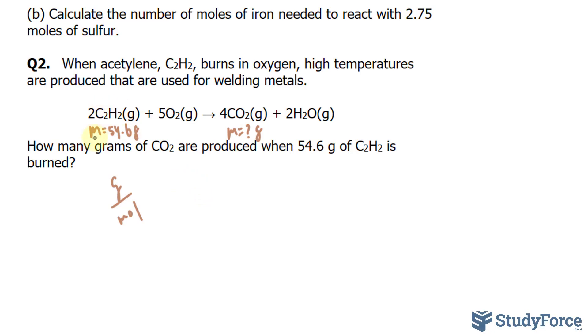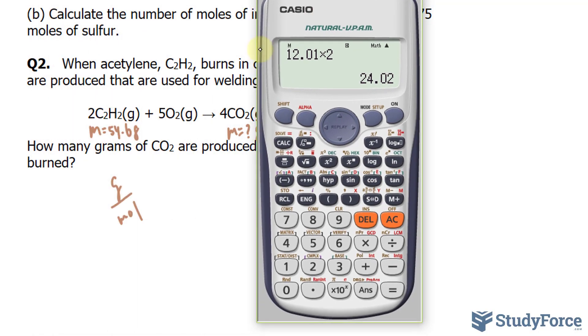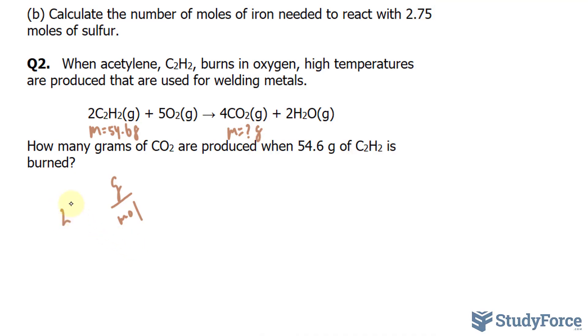And we have two of them, two atoms of carbon. So 12.01 times 2 gives us the following number. And the molar mass of hydrogen is 1.01. And we have two of those. So plus 1.01 times 2. And we get 26.04. 26.04 grams per mole is the molar mass of acetylene.